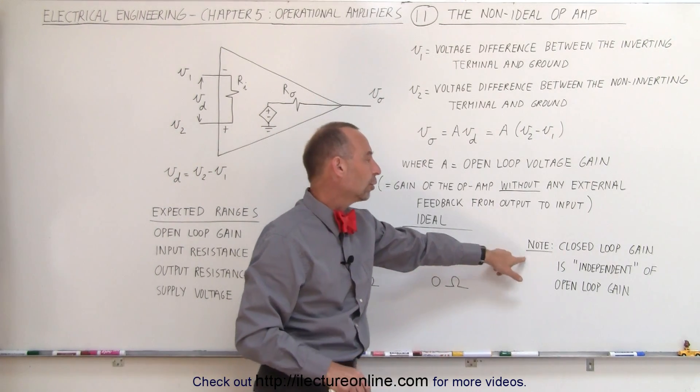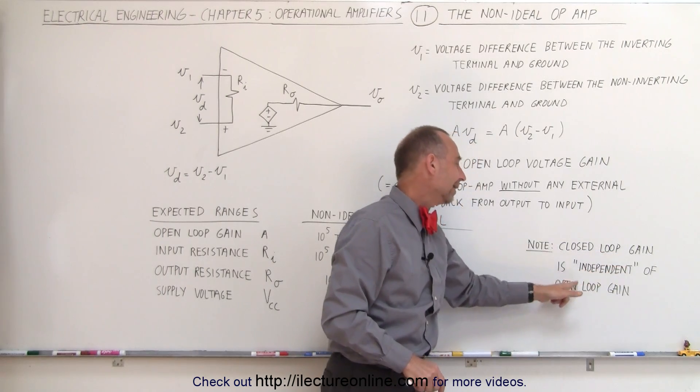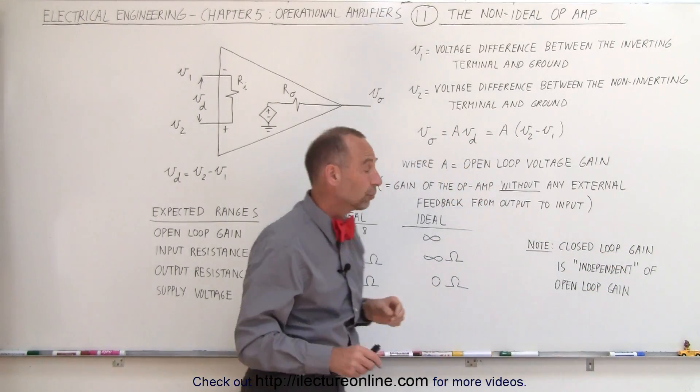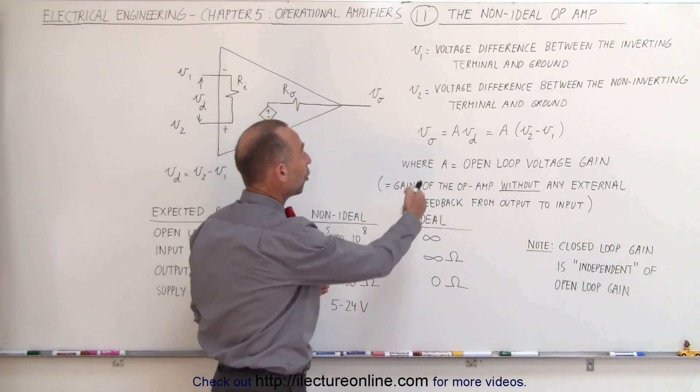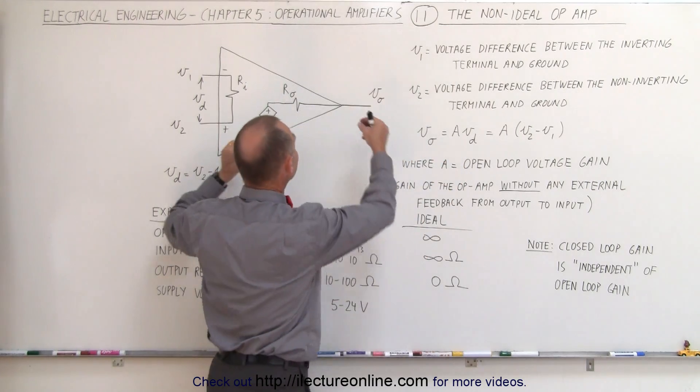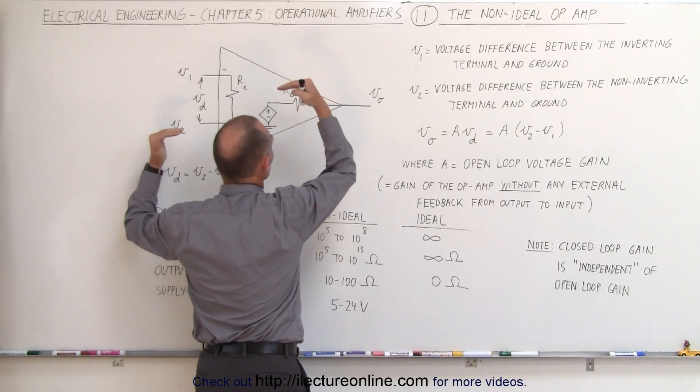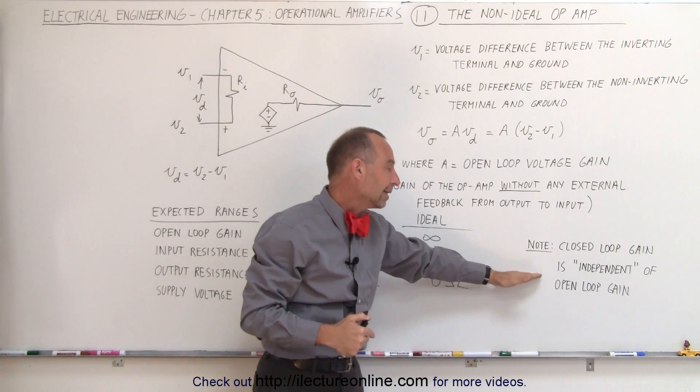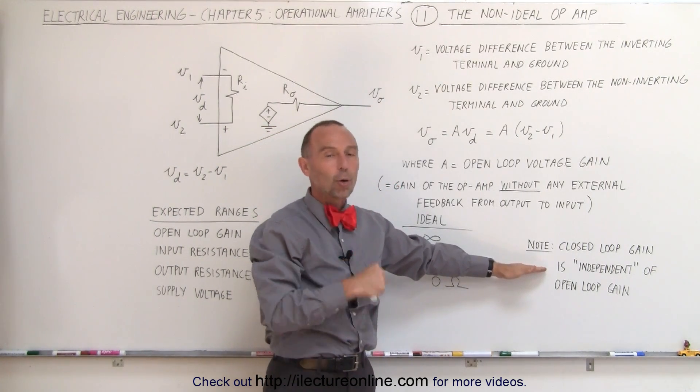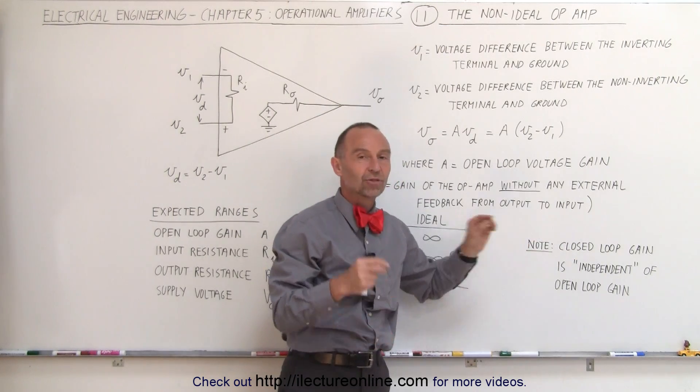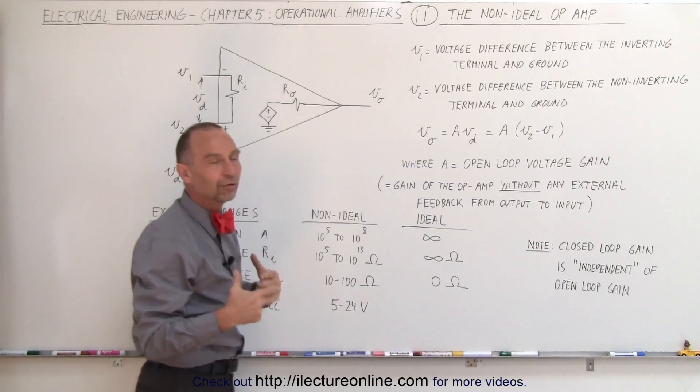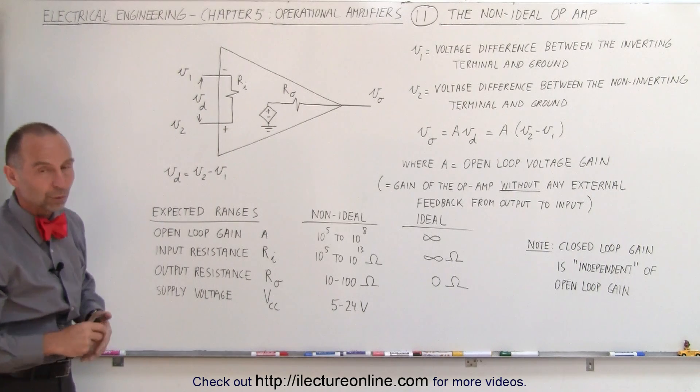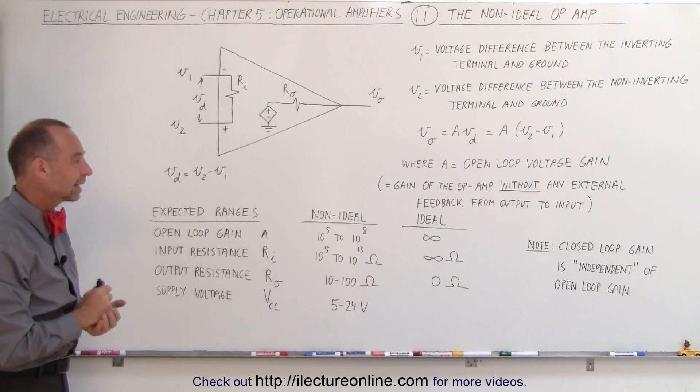Again, it's good to note that the closed loop gain is independent of the open loop gain. So even though you may have a very large open loop gain, once you start connecting resistors externally to control the voltage output relative to voltage input such as in a closed loop gain, there will not be an effect of the open loop gain. So it simply will then be restricted by the sizes or the values of the resistors that you use, and we'll see of course some examples in the coming videos.